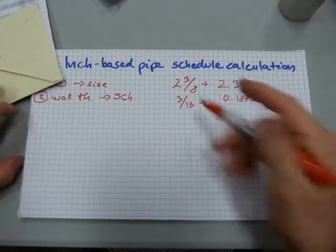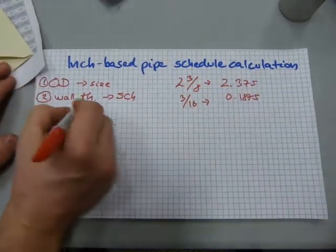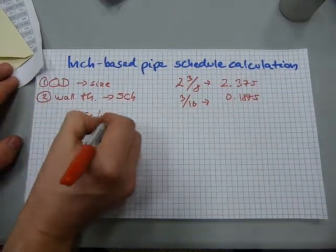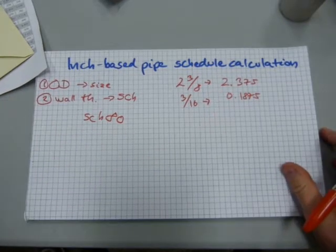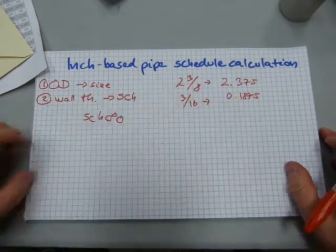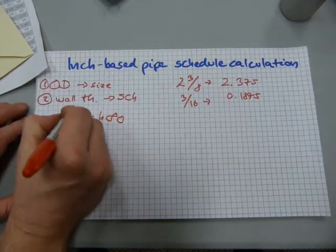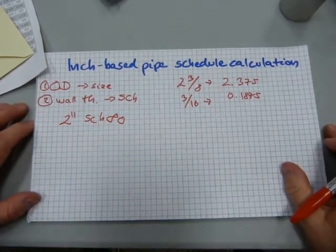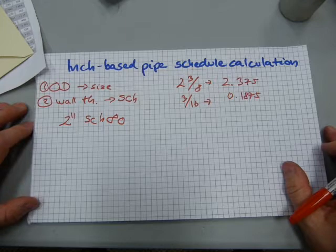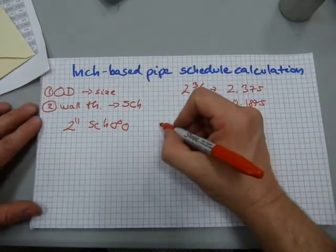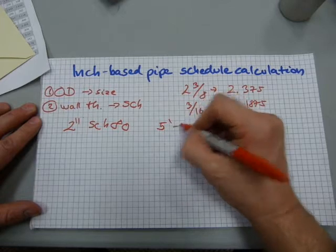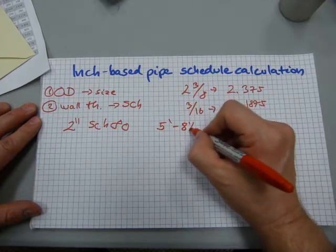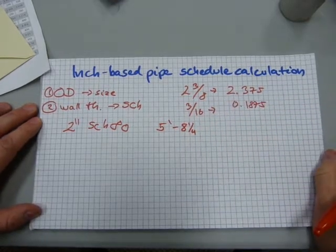This one is a schedule 80 pipe. And it was a two inch pipe. So we have a two inch schedule 80 pipe. And let's say we have, I don't know, five feet eight inches and a quarter worth of it.